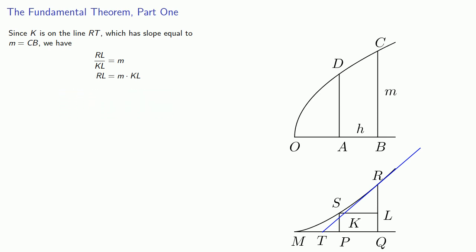Note that RL is the difference between the ordinates PS and QR. But remember that our curves are such that PS is the area OAD and QR is the area OBC. So RL is the difference in the areas OAD and OBC. That means RL by itself is equal to the area ABCD.